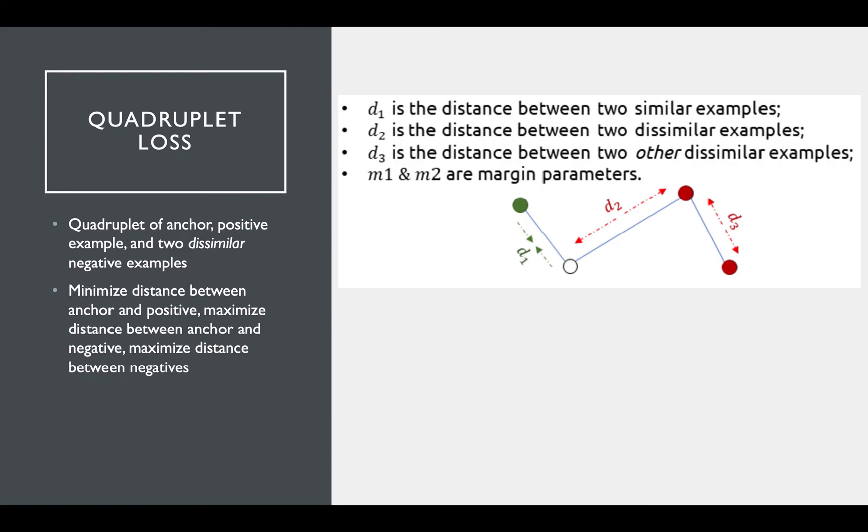Conceptually, quadruplet loss is similar to triplet loss, except now there are two negative samples, and they need to be a certain distance apart, or there's additional contribution to the loss.